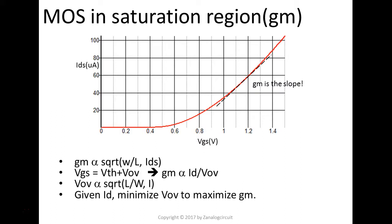So, what does that mean? That means, if you increase the IDS for the same size, V overdrive is going to increase. And, then, now, for the same current, if you decrease the WL ratio, the V overdrive is going to increase.